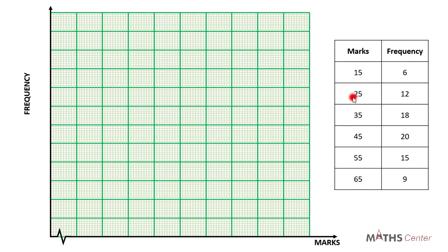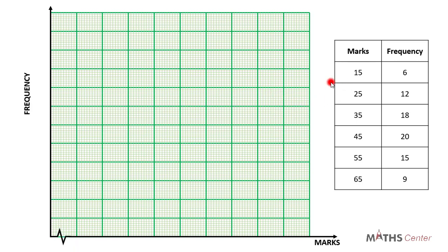So we have 15, 25, 35, 45, 55, 65. Because the marks start at 15 in the table, we are going to start the numbering from 15. So I have to bring this sign here to indicate that I have broken the part of the scale before 15 off, just as I explained in the previous video.